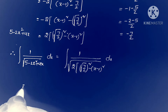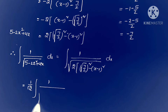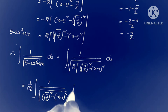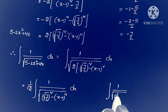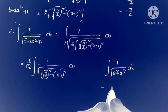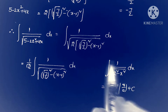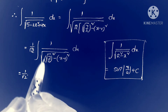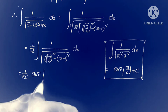Since root 2 is a constant, we take it before the integration: 1 by root 2 into integral 1 by square root of (root 7 by 2) whole squared minus (x minus 1) whole squared, times dx. This is in the form of integral 1 by square root of a squared minus x squared, dx, whose answer is sine inverse of x by a plus c. Applying this formula: 1 by root 2 into sine inverse of (x minus 1) by (root 7 by 2) plus c.